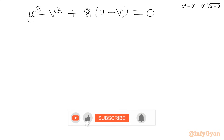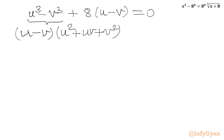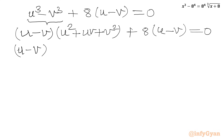Now we can apply the difference of cubes identity A³ - B³. So we can write (u - V)(u² + uV + V²) + 8(u - V) = 0. Since (u - V) is common, we factor it out to get (u - V)(u² + uV + V² + 8) = 0.